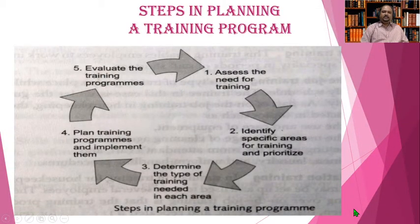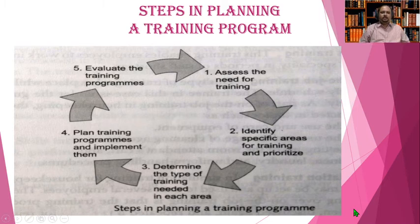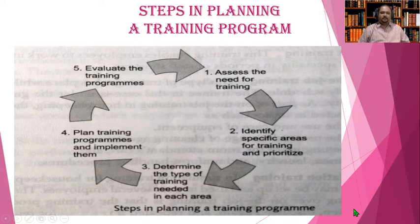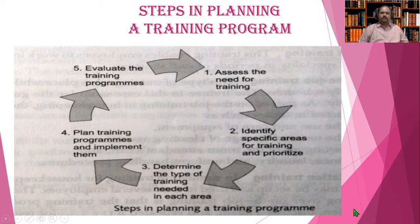Having understood different types of training, let us understand the steps in planning a training program. The first step is to assess the need for training. The second is to identify specific areas for training and prioritize them. Third, determine the type of training needed. Fourth, plan and implement the training programs. Fifth, evaluate the training programs.